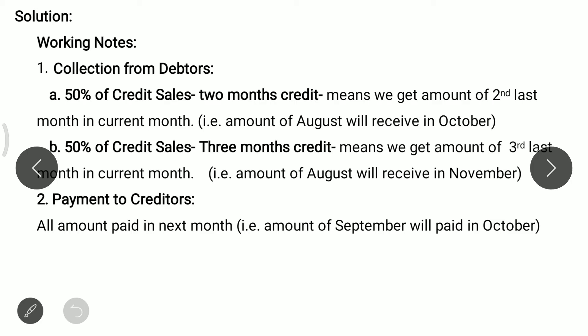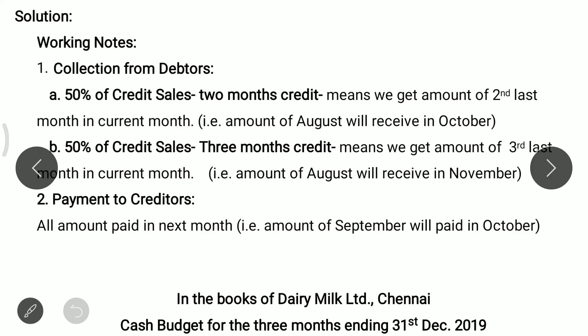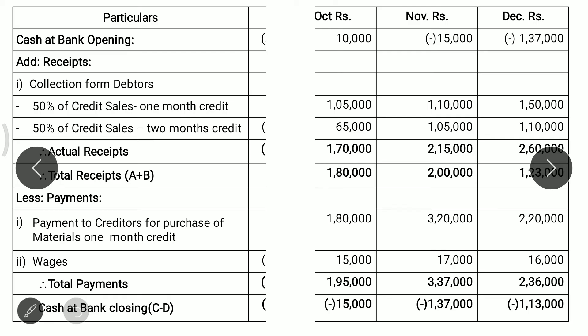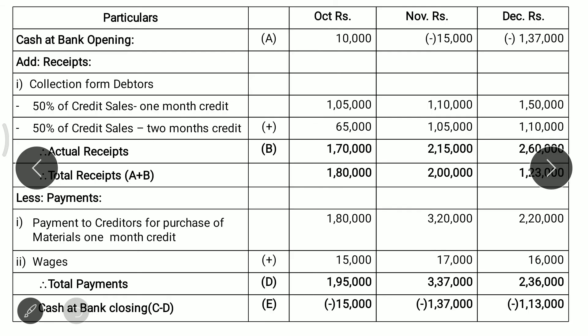Now the actual problem. We write the heading: In the books of Dairy Milk Ltd. Chennai — Cash Budget for the 3 months ending 31st December 2019. We prepare a table with 3 columns for October, November, and December.